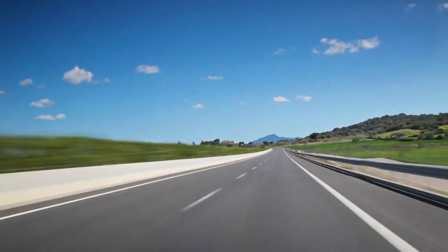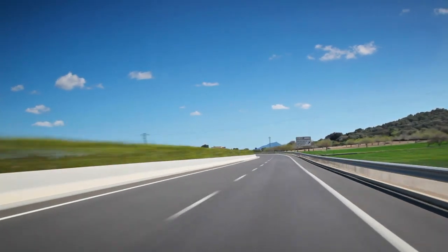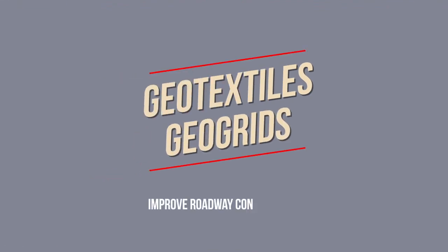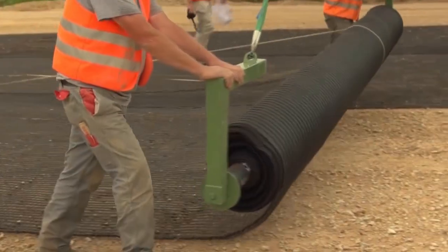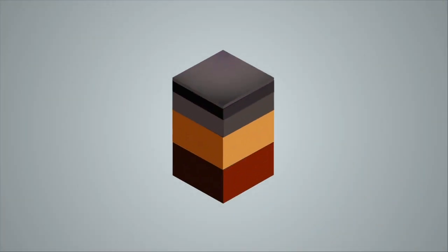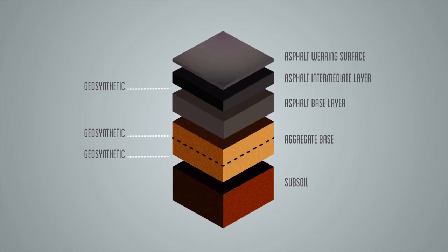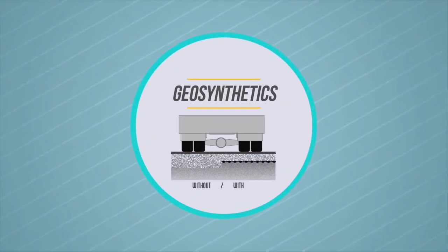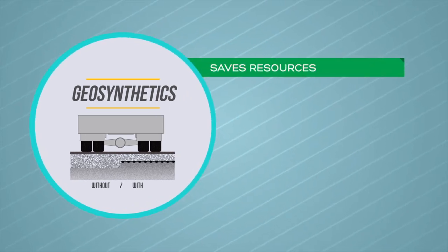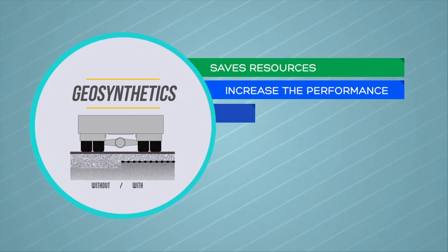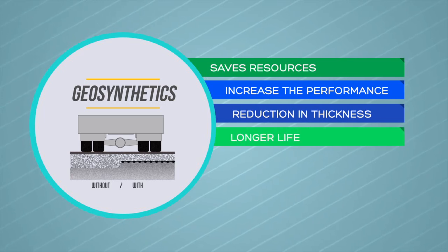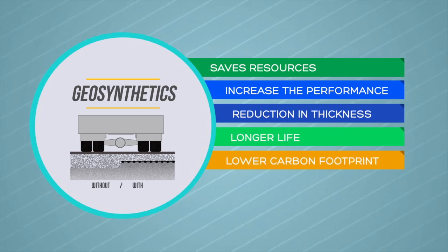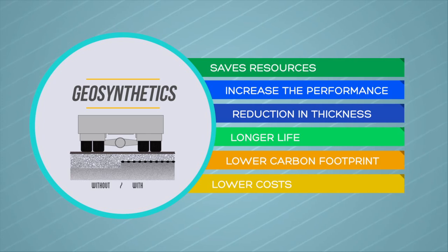Of significant importance to all communities is the provision and maintenance of roadways. Geo-textiles and geo-grids improve roadway construction by lengthening the designed life and reducing the quantity of required natural materials. Road life is increased through the separation and stiffening of layers of stone and asphalt. Geosynthetics may also increase the performance of asphalt surfaces before rehabilitation is required. The reduction in thickness of material layers and longer life contribute to a lower carbon footprint and lower costs.